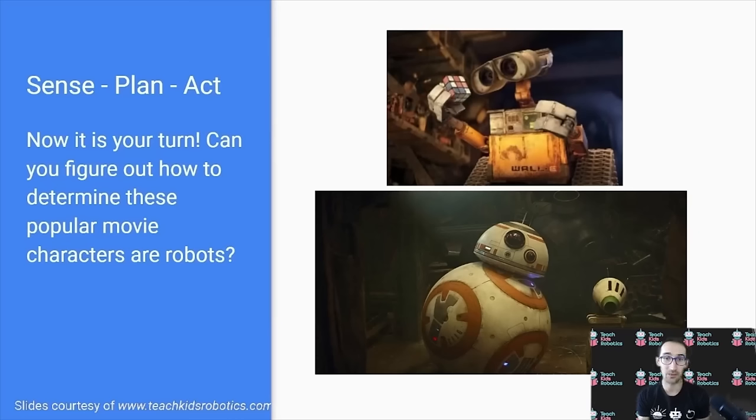We can see they all have plans, whether they be to help the protagonist or to solve a Rubik's Cube. And we can see they're capable of acting in the real world, actuating and moving their motors, enabling them to either roll around as BB-8, or move their arms and roll around as WALL-E.